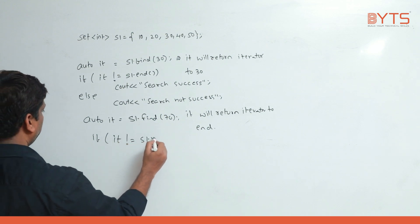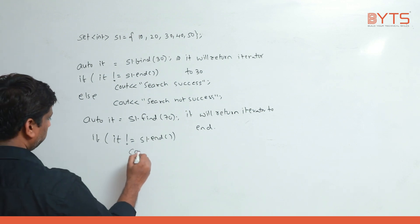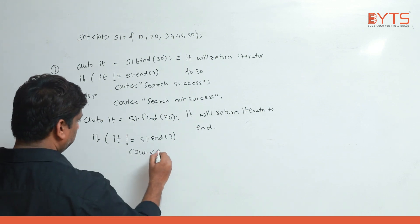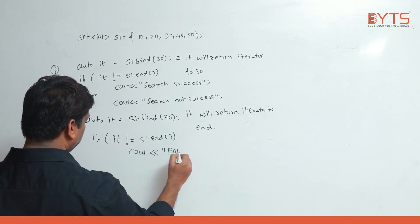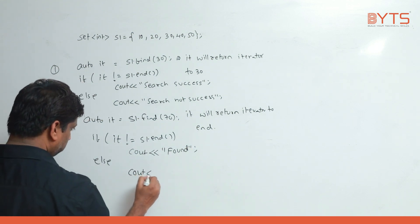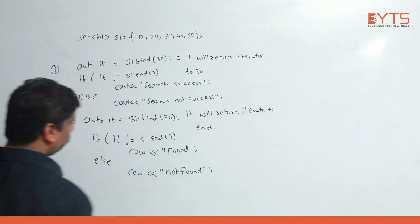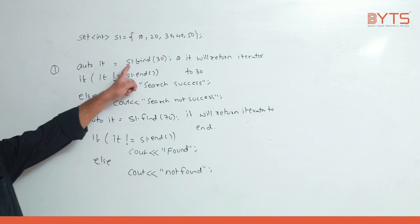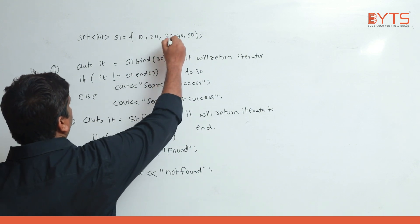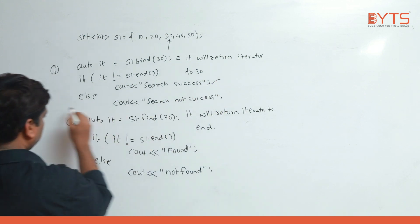In another version: if it != s1.end(), cout << 'found'; else cout << 'not found'. Now s1.find(30) — 30 is there, iterator is not equal to end, so we get 'search success' or 'found'.